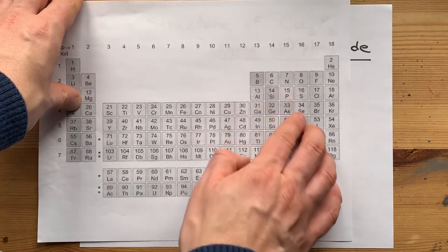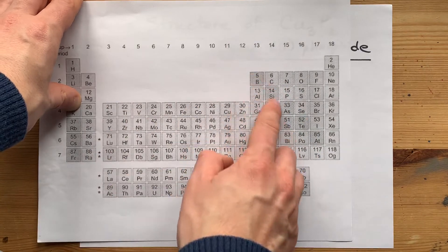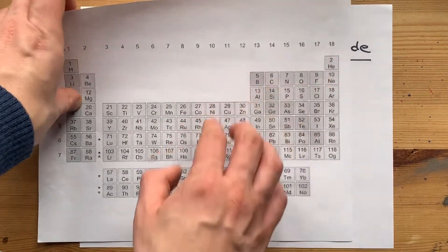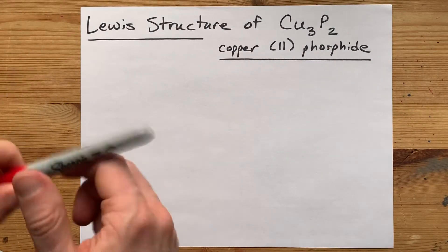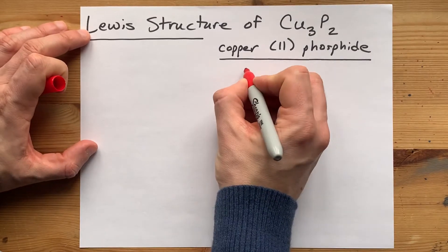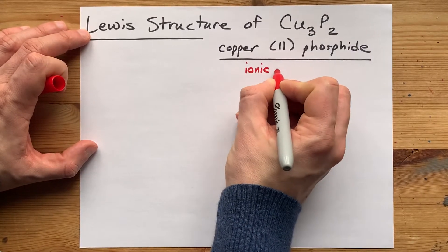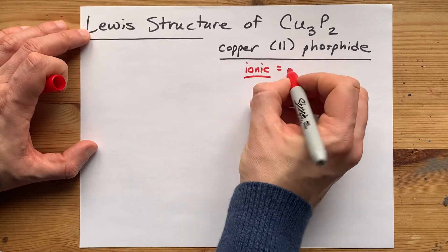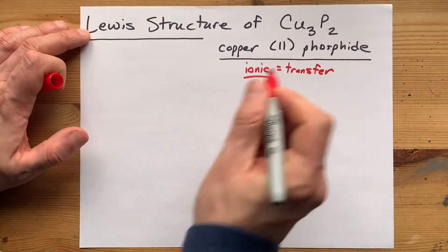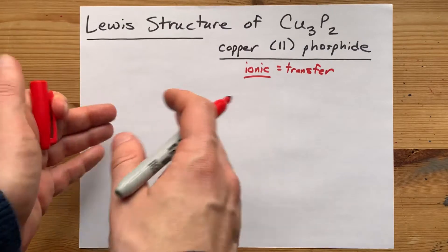I know copper is a metal because it comes from the left side of this staircase of semi-metals, and phosphorus is a non-metal because it comes from the right-hand side. The reason that's important is metals and non-metals combine to make ionic compounds, and ionic compounds have a transfer of electrons from metal to non-metal.